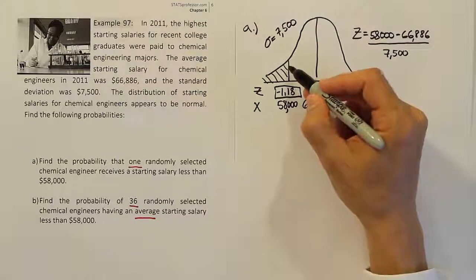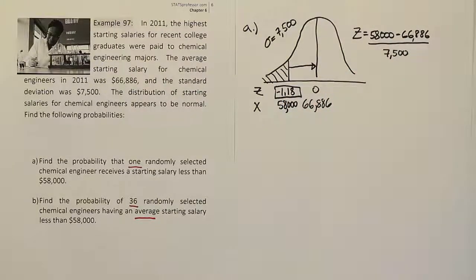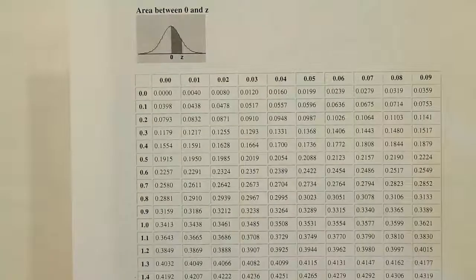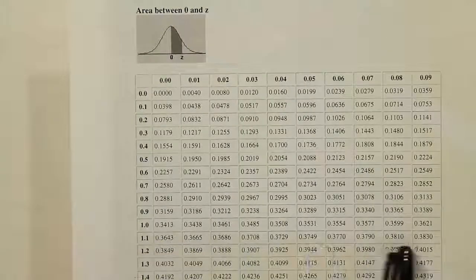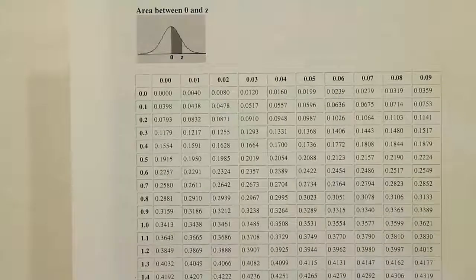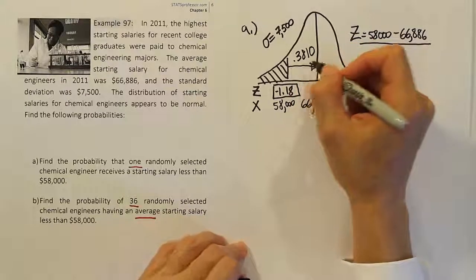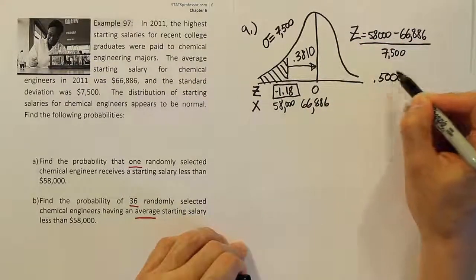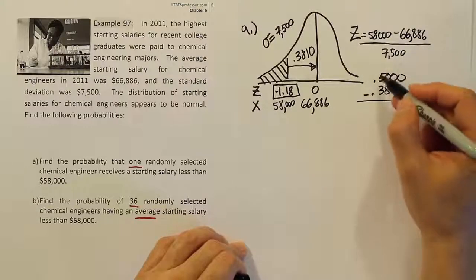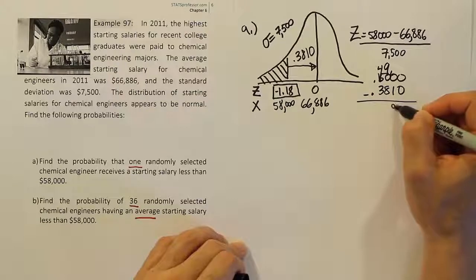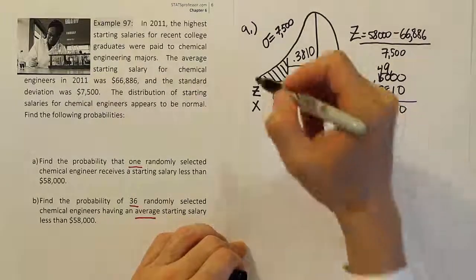So let's go to our table and we look up that number. Remember, we'll get the area from here to here from the table. We need to do 0.5 minus that area to find the area in the tail. We're looking up the 1.18 value, the negative 1.18. We'll go to the 1.1 row, go over to the 8th position and we get the answer 0.3810. To find the tail area, we're going to have to do 0.5 minus 0.3810. We end up with 10 minus 1, which is 9, 9 minus 8, which is 1, and 4 minus 3, which is 1. So we get basically 11.9%. So that's the area in the tail, which of course is our overall answer.